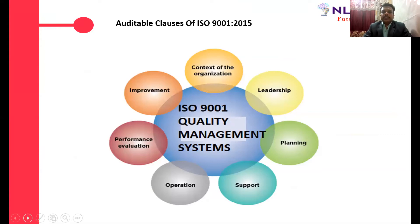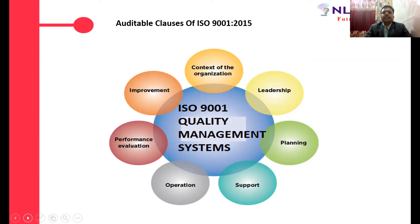This standard has 10 different sections. Section one is the scope, section two is normative references, section three is terms and definitions. From section four, the auditable clauses begin — section four describes the context of the organization. Section five talks about leadership and their responsibilities and accountability. Section six talks about planning for risks and opportunities. Section seven covers the different support activities required for good quality management. Section eight, the most important section, covers how you need to produce products and services and how you need to design them.